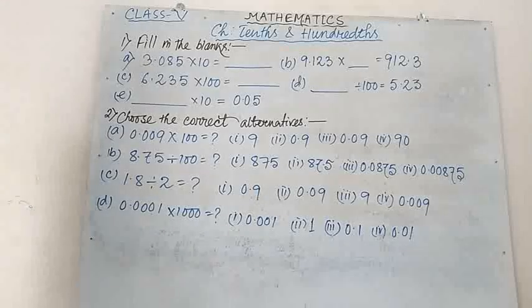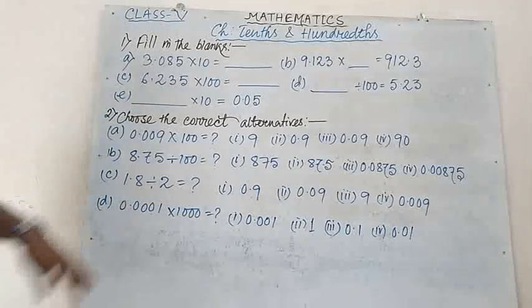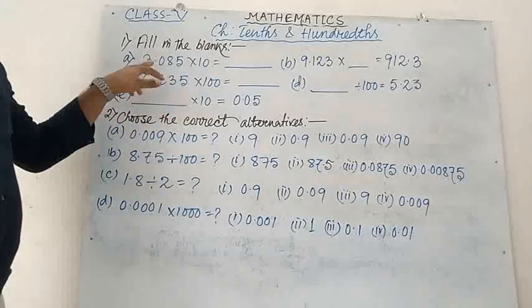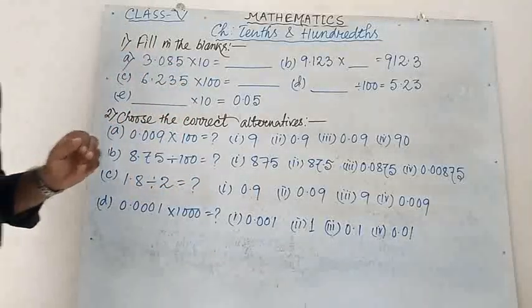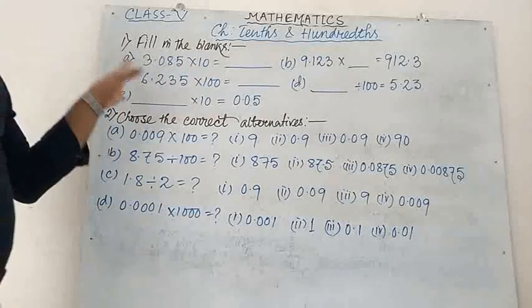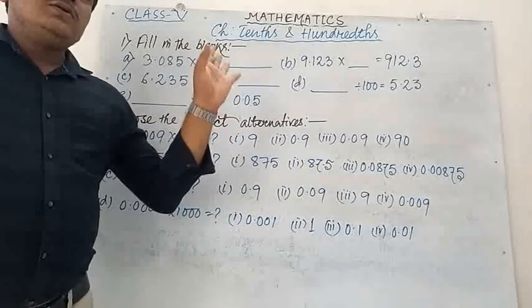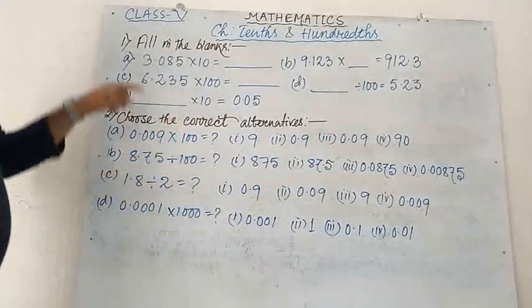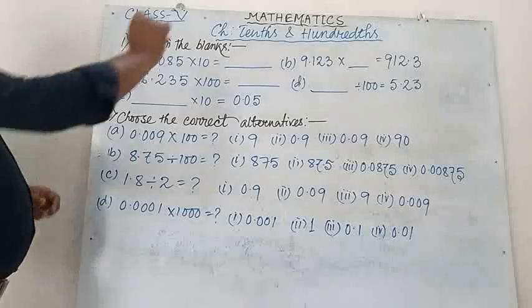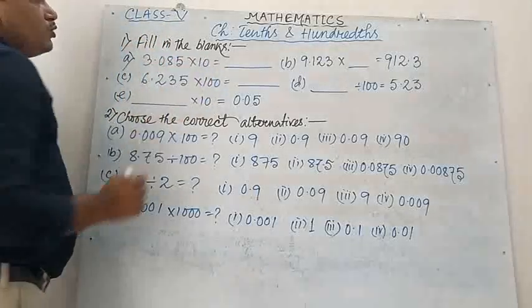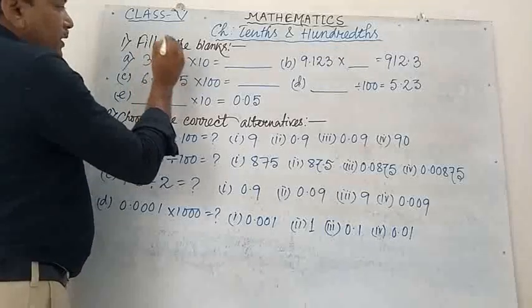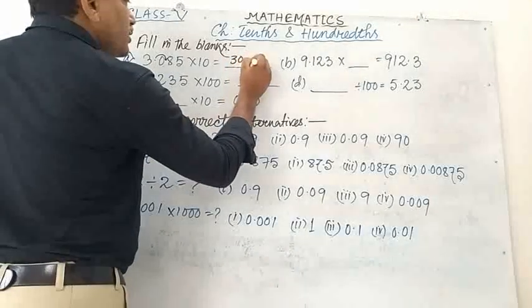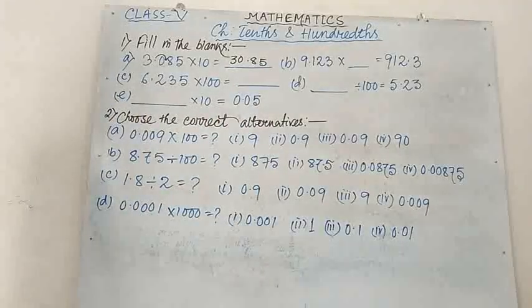Number 1, fill in the blanks. First one: 3.085 into 10 equals to dash. As we know, when we are multiplying by 10, the point will shift one digit from its current position to the right. So here, 3.085 into 10 — the point will shift after 0. So the answer will be 30.85.